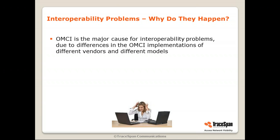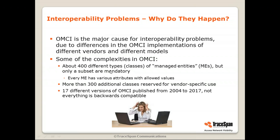Each of them thinks, and maybe really believes, that his side of the network is working properly and the problem is the other end. It may be that each end is working correctly, but there are still interoperability problems. Why do these interoperability problems happen? The major cause is the OMCI protocol — the management protocol used in PON technologies: GPON, XGS-PON, and others. The main cause is differences in OMCI implementations of different vendors and models. OMCI has various complexities: it defines about 400 different types, called classes of managed entities, which are the basic building blocks used to describe the MIB. Only a subset are mandatory, and every ME has various attributes with allowed values. There are more than 300 additional classes reserved for vendor-specific use.